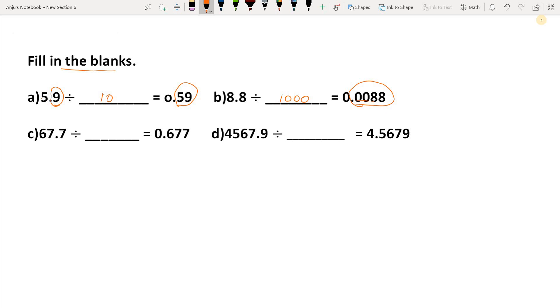Next: 67.7 is divided by what to get 0.677? Students, here you can see the decimal point moved two digits. It was between seven and seven, now it has come after the 6. One, two—two digits moved. This means it is divided by 100, because when we divide by 100, the decimal point moves two digits from right to left.